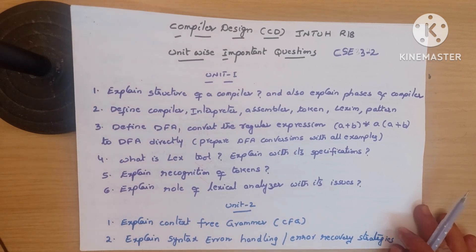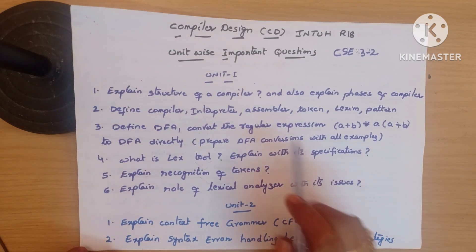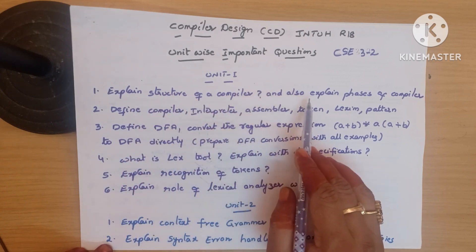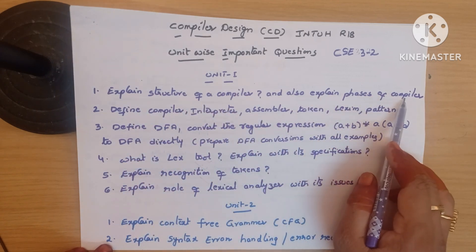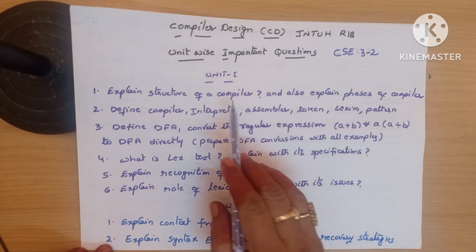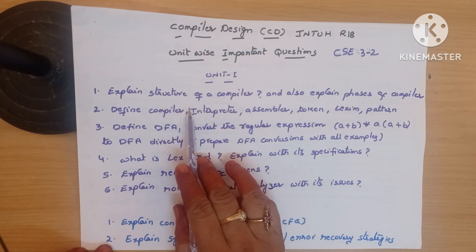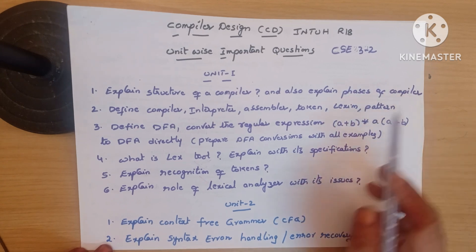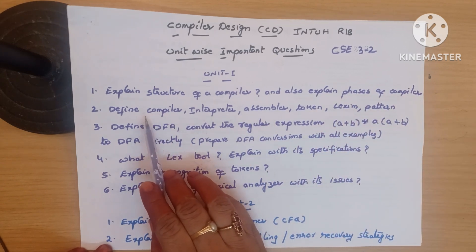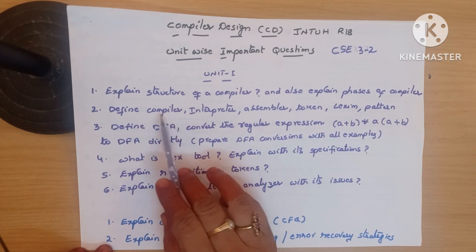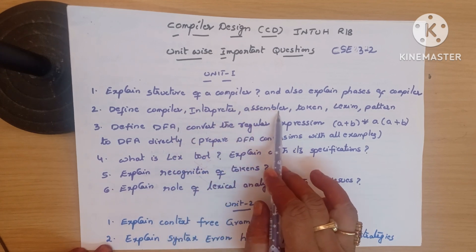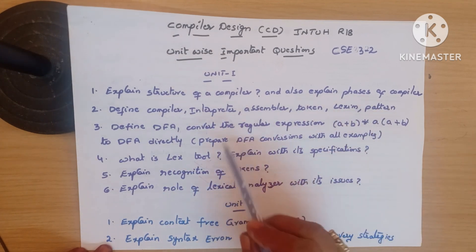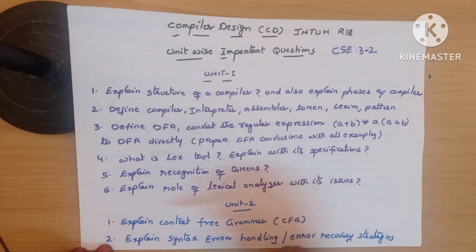Now we go to long answer questions unit-wise. Unit 1: explain the structure of a compiler and explain the phases of a compiler — what is a compiler, what is the structure, what are the different phases — an important question. Next: definitions — define compiler, interpreter, assembler, token, lexeme, pattern.